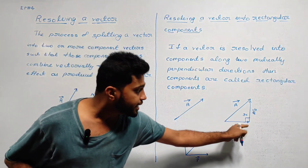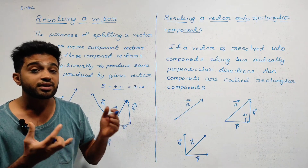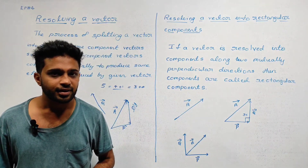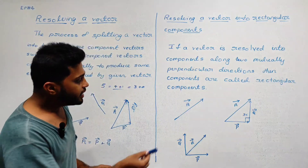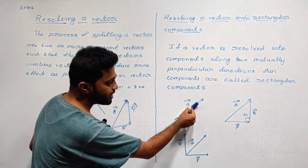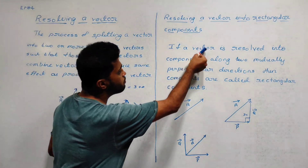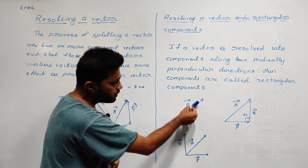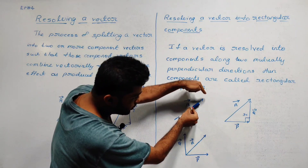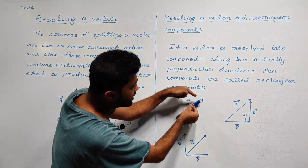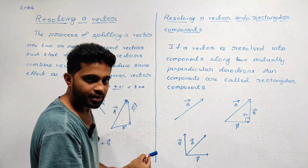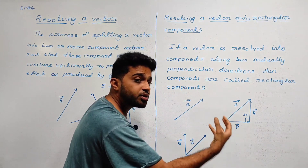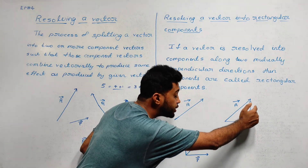What are these two vectors? Rectangular components at 90 degrees. Vector A is resolved into components vector P and vector Q. We resolve the vector A into rectangular components: vector P along the x-axis and vector Q along the y-axis.